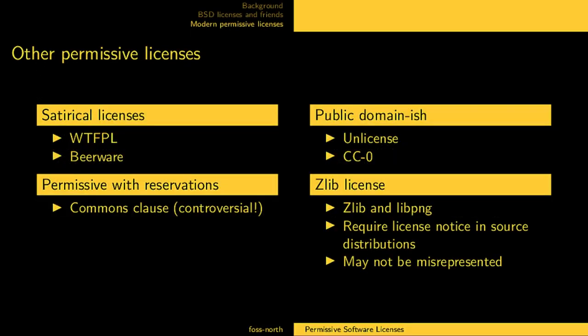I want to list some other permissive licenses, grouped into categories. There is the WTF Public License, which is kind of a public-domain-ish one originally made as a joke. It just says: do what the fuck you want with the software — with no warranty and so on. And then there is Beerware, which is very permissive but you are encouraged to buy a beer for the author if you ever meet them — not required, just encouraged.